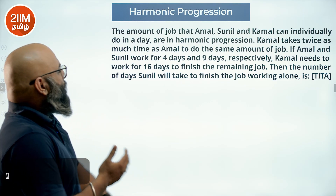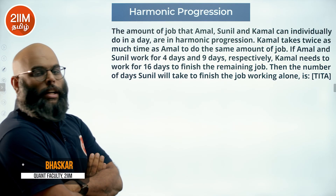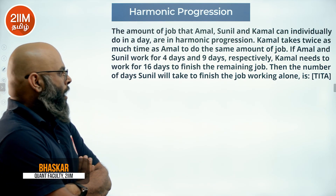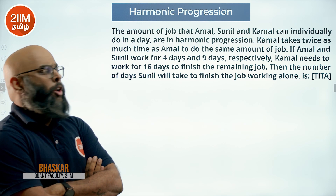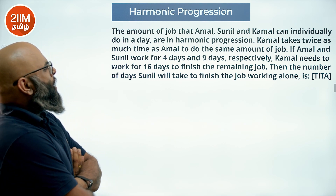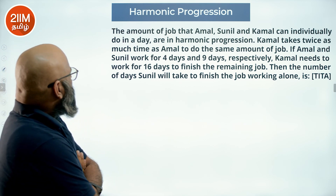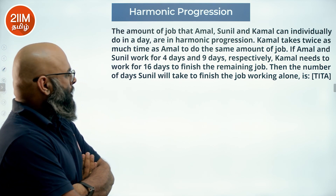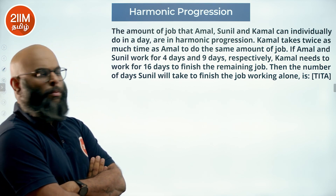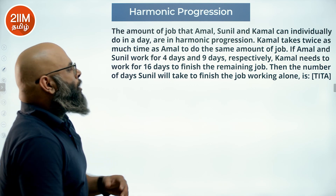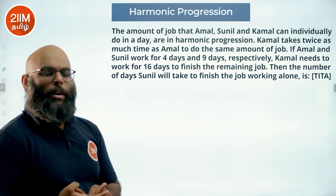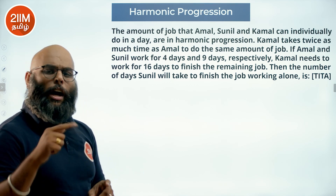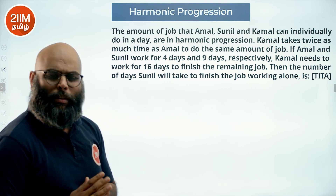The amount of job that Amal, Sunil, and Kamal can individually do in a day are in harmonic progression. Kamal takes twice as much time as Amal to do the same amount of job. So Amal, Sunil, and Kamal — these three names represent efficiencies in harmonic progression.